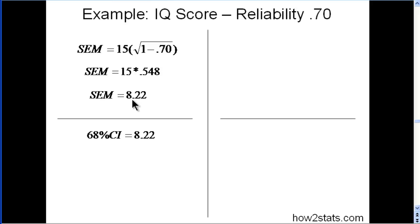Which means that if we wanted to calculate the 68% confidence intervals for someone with an IQ score of 100, we would say that their true IQ score falls somewhere between a lower bound of 91.78 and an upper bound of 108.22.